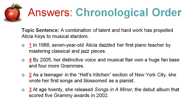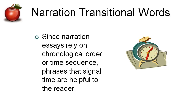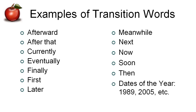Transitional words move you from one paragraph to the next, or from one part of your story to the next. Since narration essays rely on chronological order or time sequence, words and phrases that signal time are helpful to keep the reader clear on the order of your experience. Examples of transition words you will use in a narration essay: afterward, after that, currently, eventually, finally, first, later, meanwhile, next, now, soon, then — or you can use dates of the year, as we saw in the Alicia Keys example. Use transitional words so that we know you are moving to another part of your story.